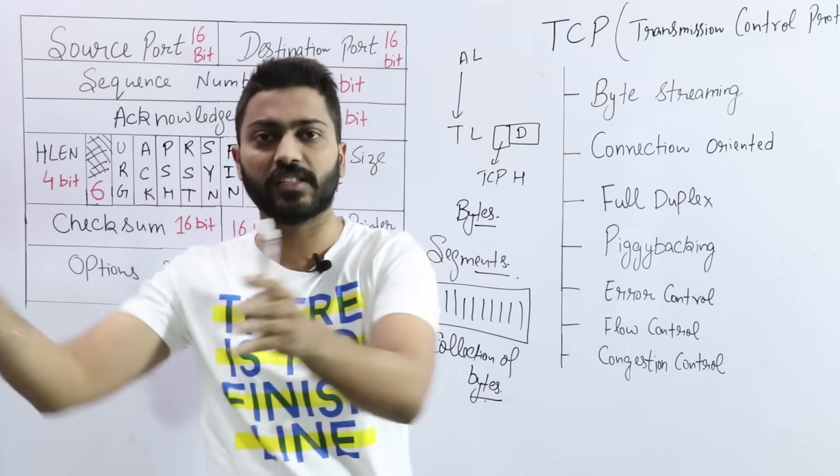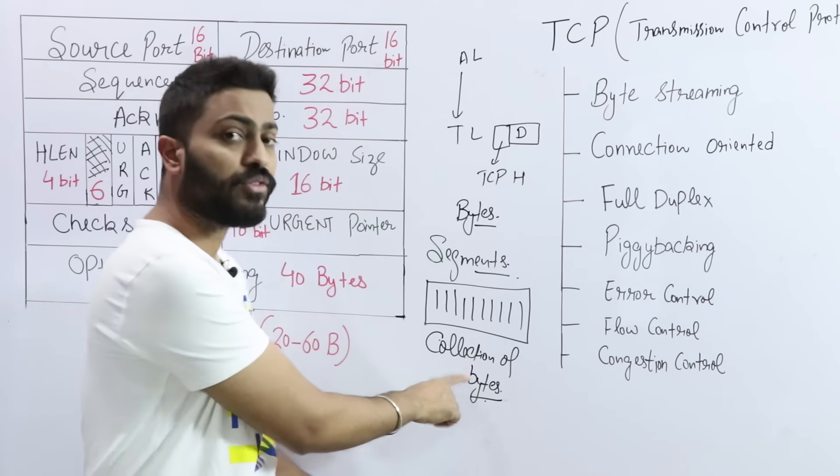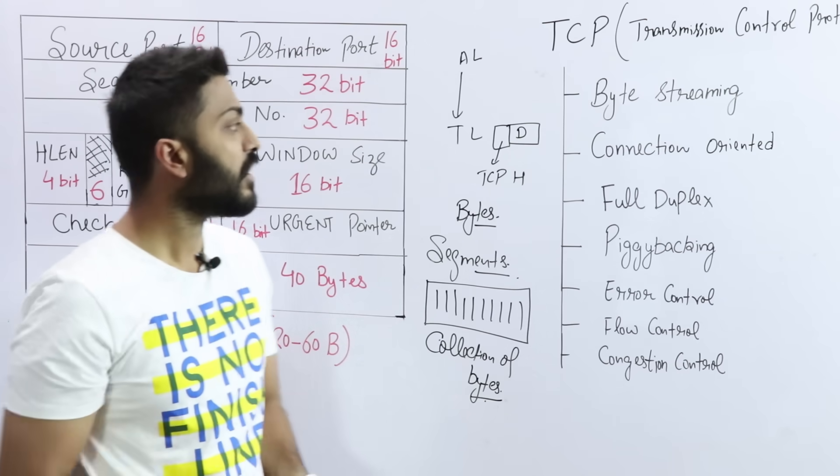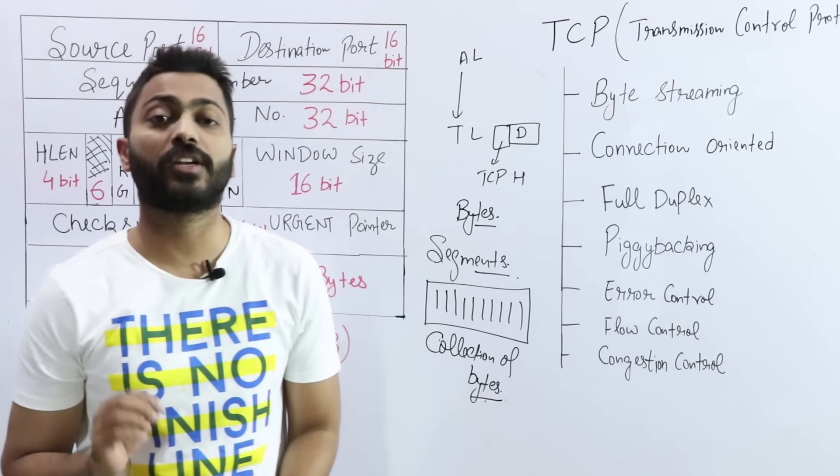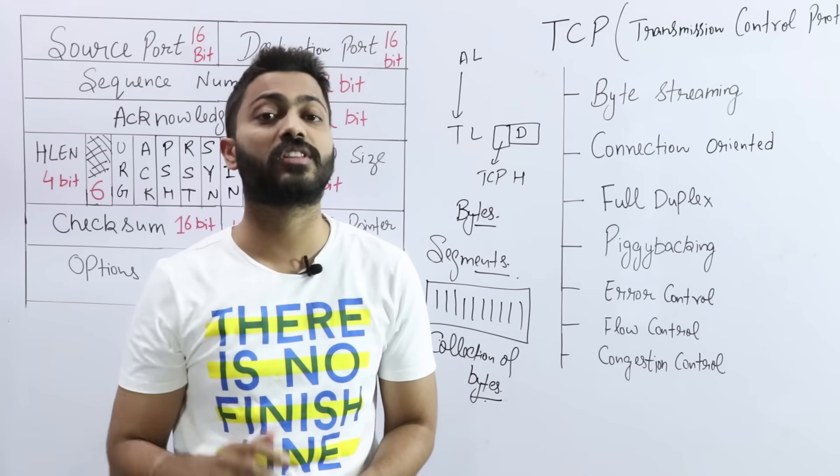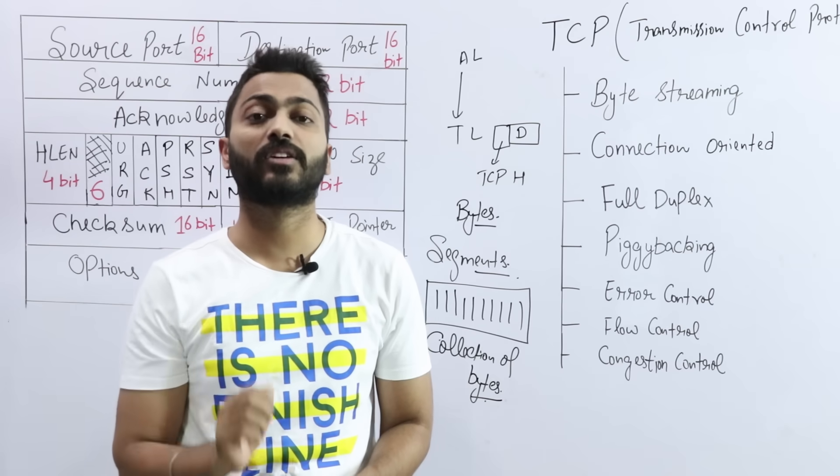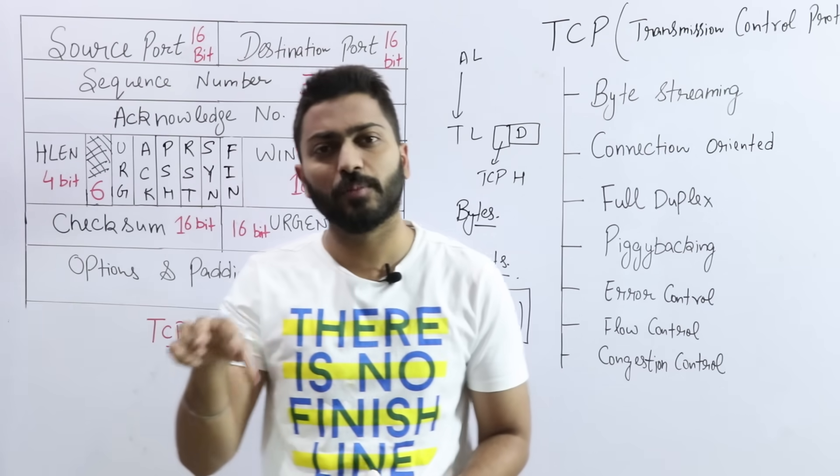So continuously when data comes, they convert bits to bytes and we call a segment a collection of bytes. So TCP creates segments, one segment, two segments, and each segment is a collection of various bytes. Next is connection oriented. TCP is working as a connection oriented because when we use the network layer,